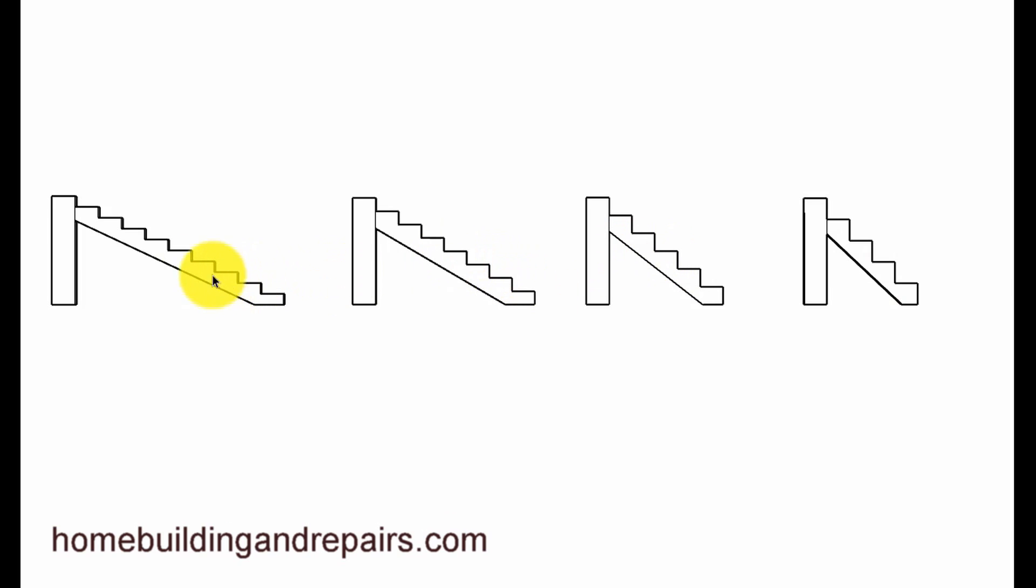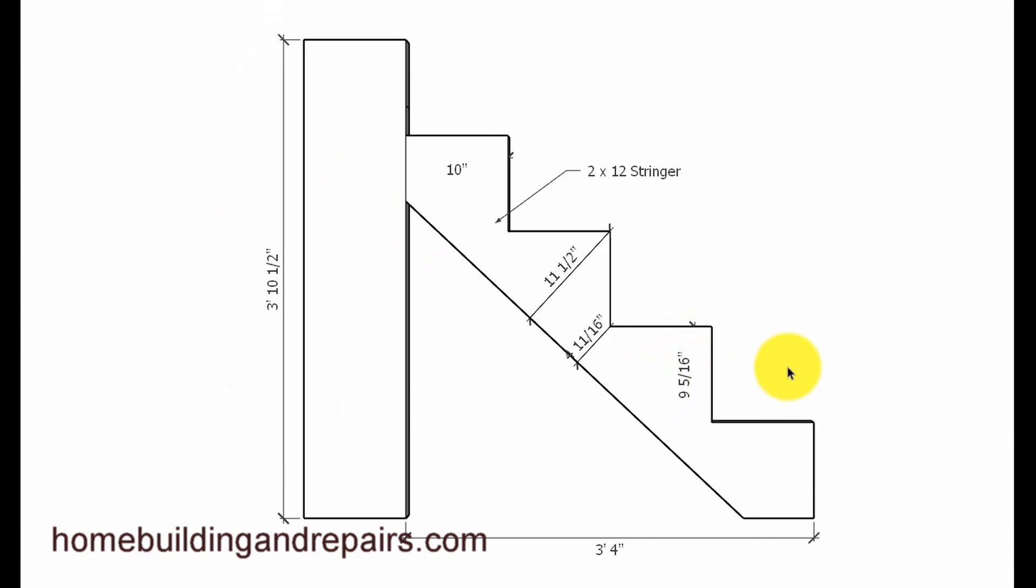The one with five risers here has a riser height of nine and five sixteenths. Remember, this wouldn't work good - your building inspector wouldn't like it. They don't want to see them over eight inches, and seven and three-quarter inches is building code for most stairs, but some residential stairways can qualify for the eight inch maximum measurement.